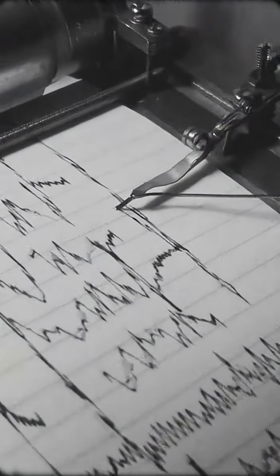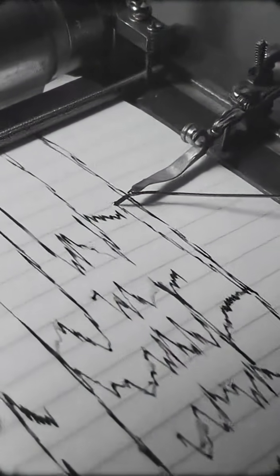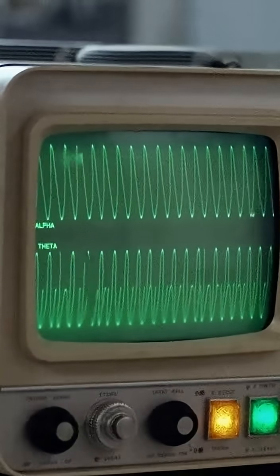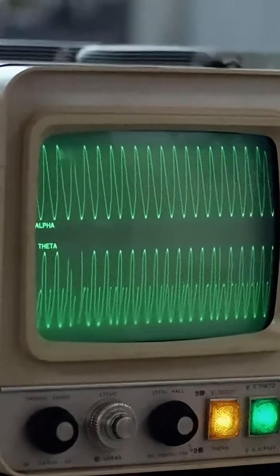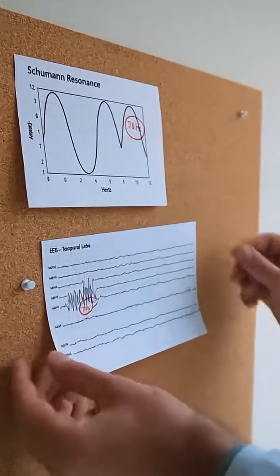EEG research mapped human brainwaves in that same range. Theta, alpha, 4 to 12 hertz. Two systems vibrating and overlapping bands.